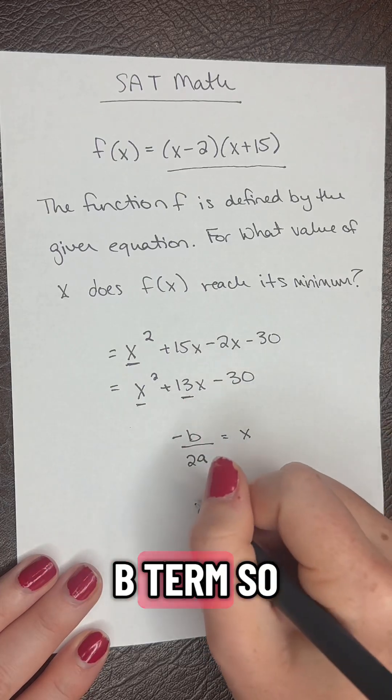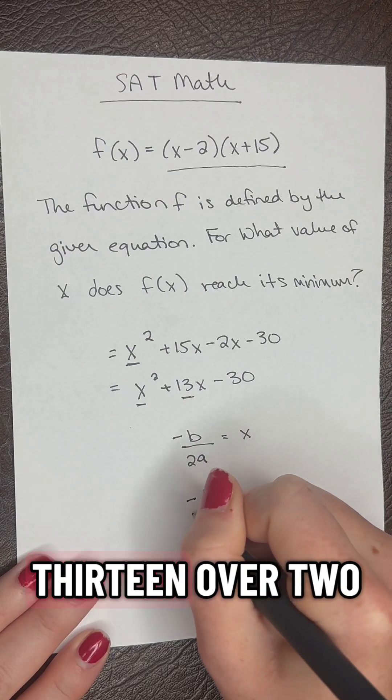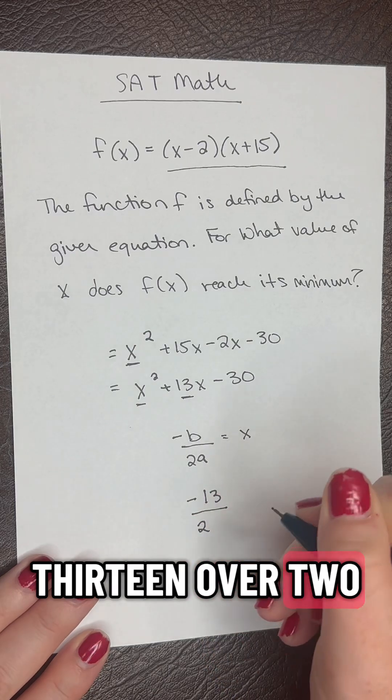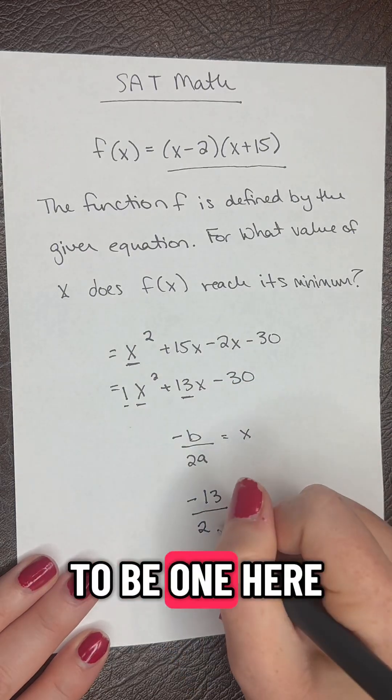This is our b term, so we'll have negative 13 over 2 times our a term, which is 1.